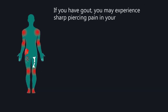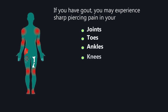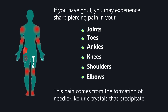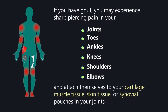If you have gout, you may experience sharp, piercing pain in your joints — toes, ankles, knees, shoulders, or elbows. This pain comes from the formation of needle-like uric crystals that precipitate and attach themselves to your cartilage, muscle tissue, skin tissue, or synovial pouches in your joints.